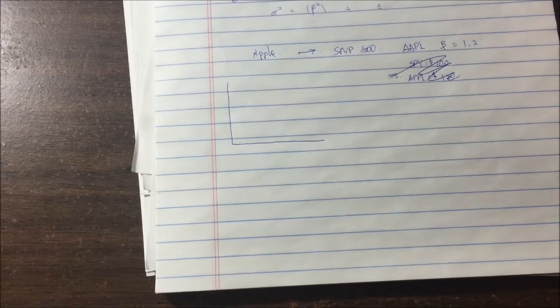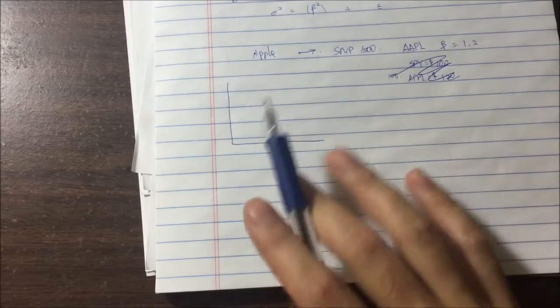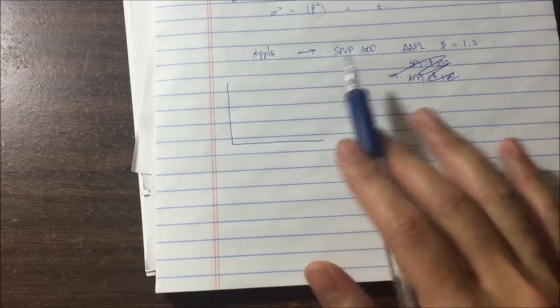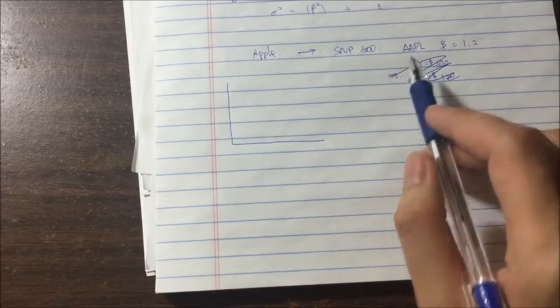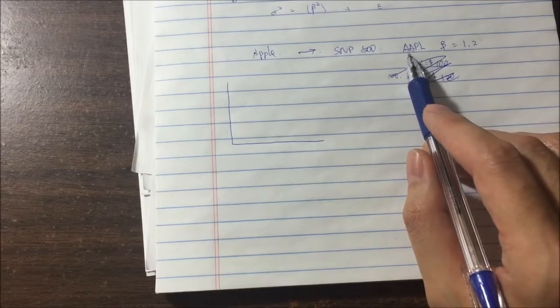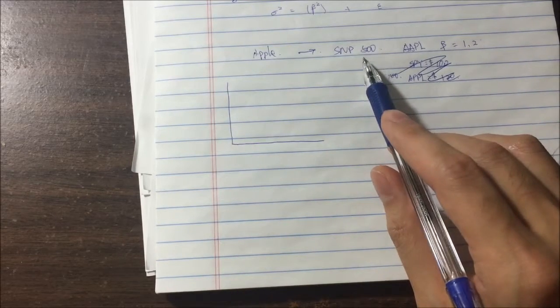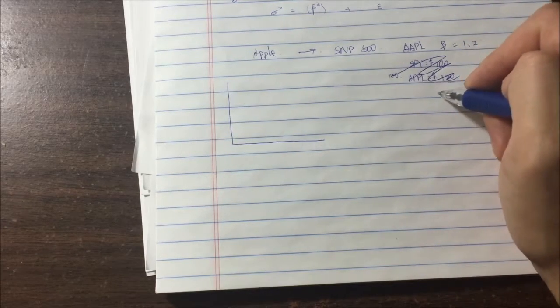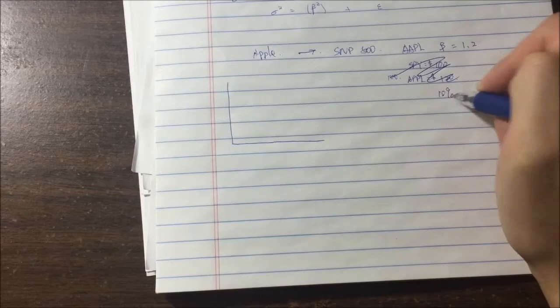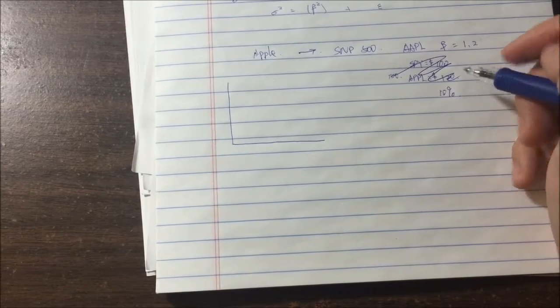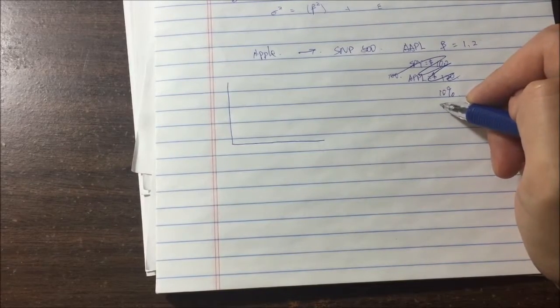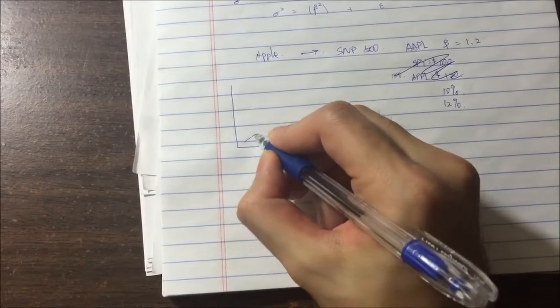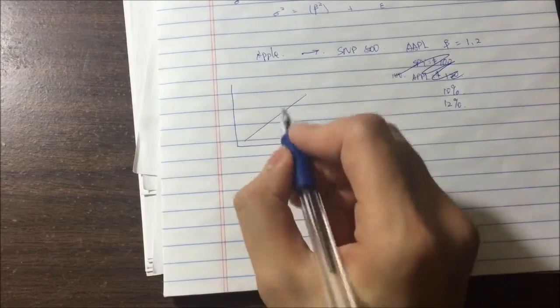So to your second question, in terms of beta we always talk about beta in respect to a market portfolio or some kind of index against another return. So let's say if we say Apple has a beta of 1.2 in respect to S&P 500 index, that means if the return for S&P 500 is, let's say, 10% for one particular month and for Apple is 12%, so this is kind of like the slope for Apple.